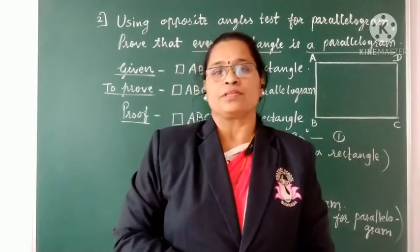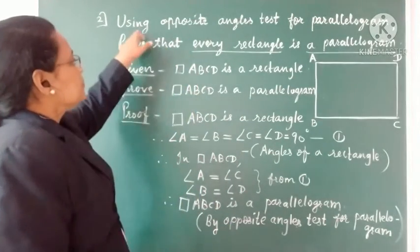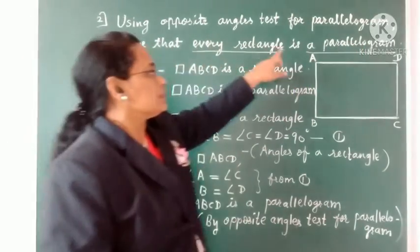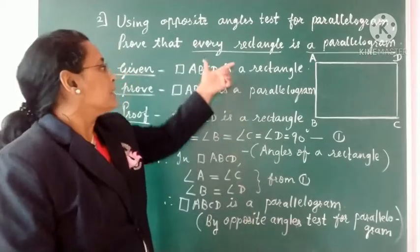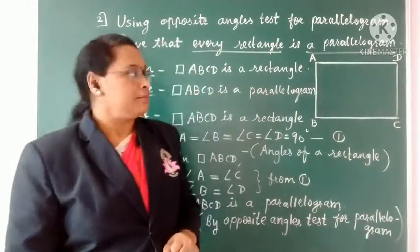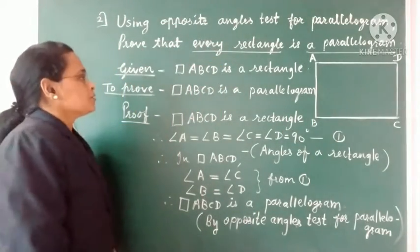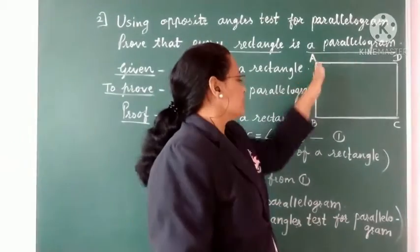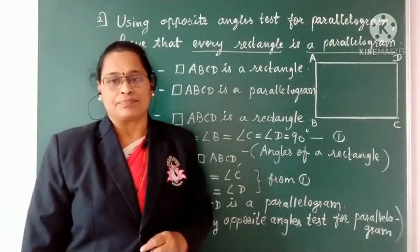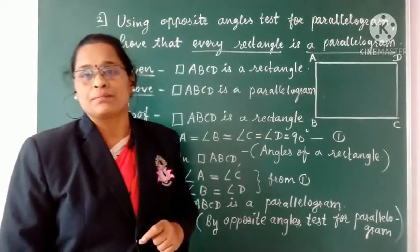This is the second example of Practice Set 5.2. Using the opposite angle test for parallelogram, prove that every rectangle is a parallelogram. We need to draw the diagram. The given thing is that the quadrilateral is a rectangle. Let's draw rectangle ABCD. Given: quadrilateral ABCD is a rectangle. To prove: quadrilateral ABCD is a parallelogram.